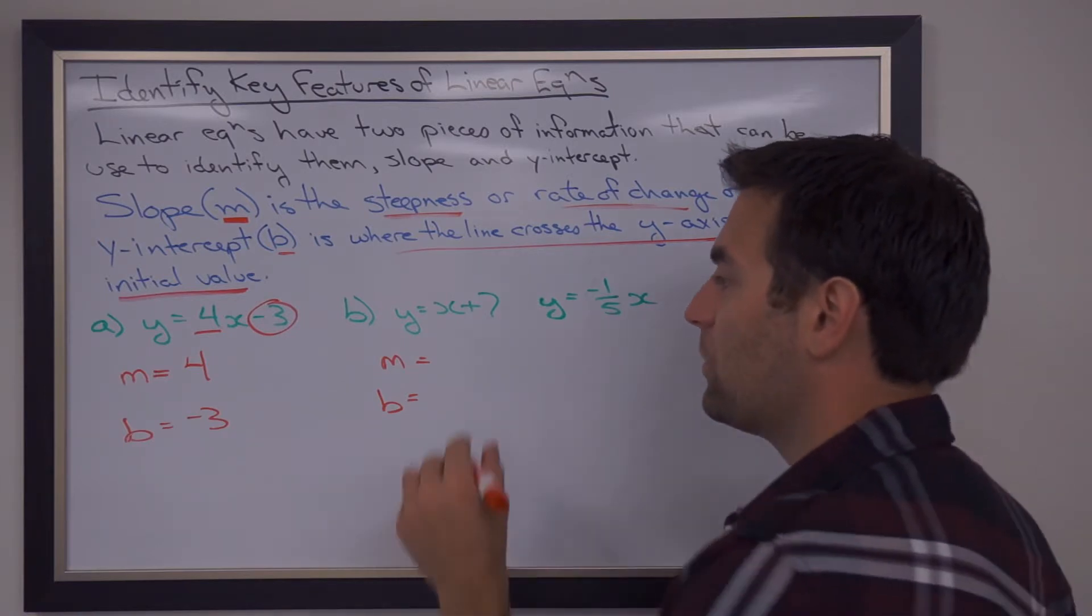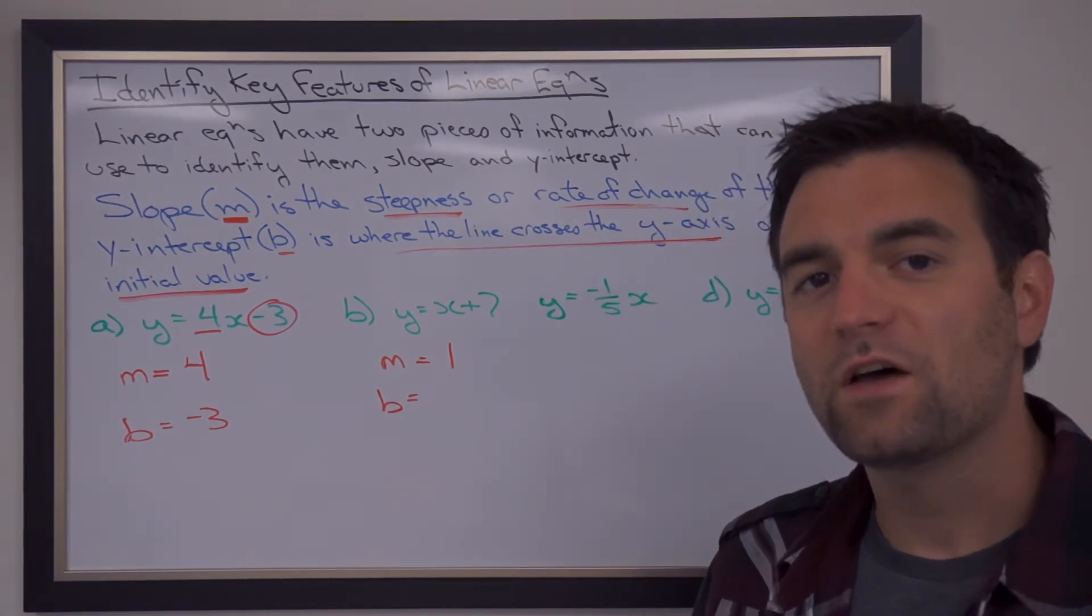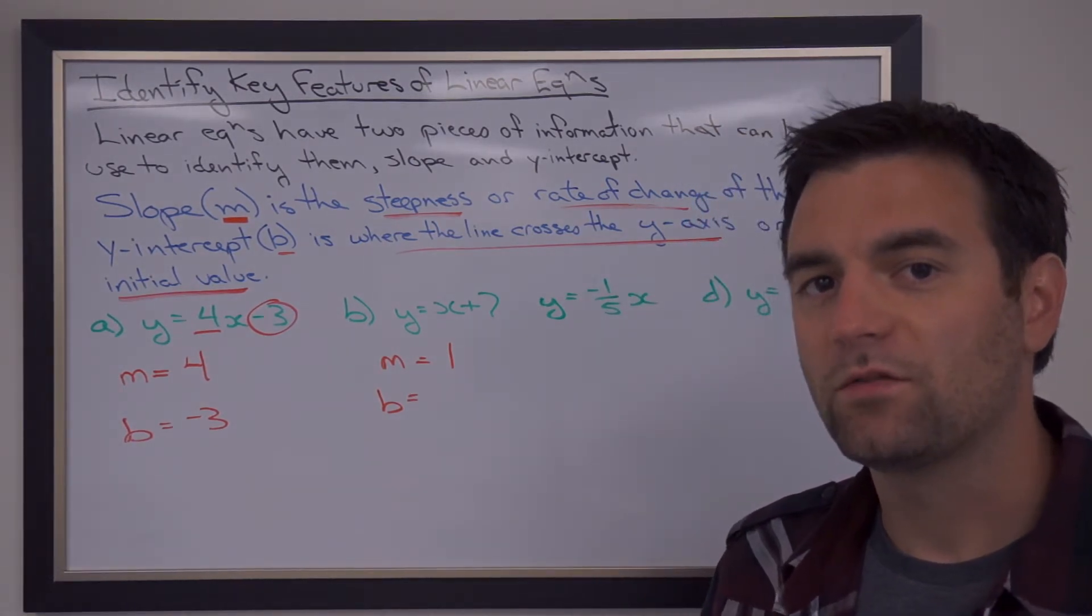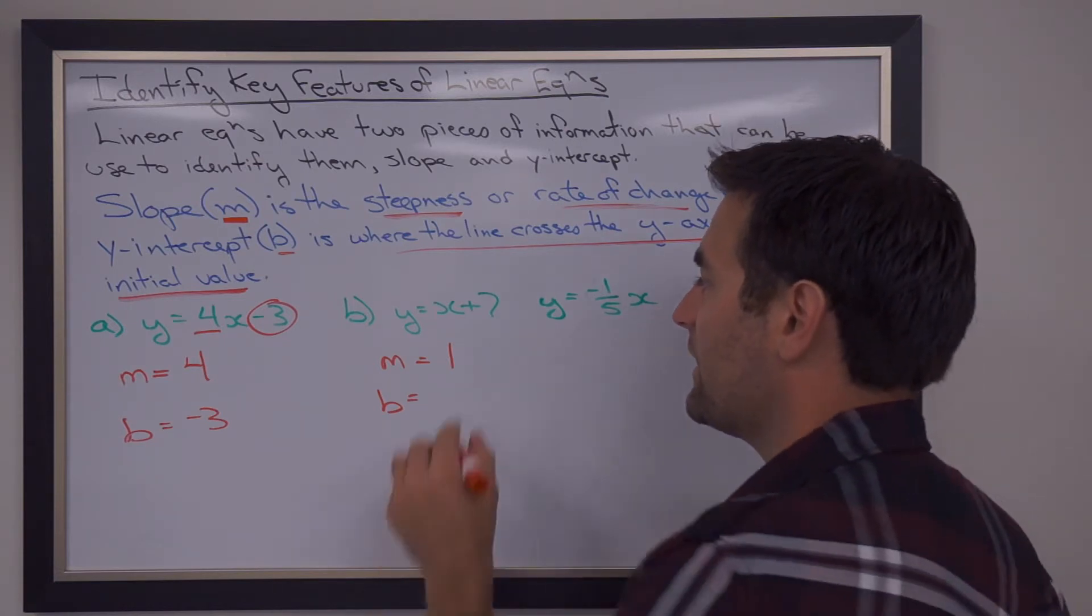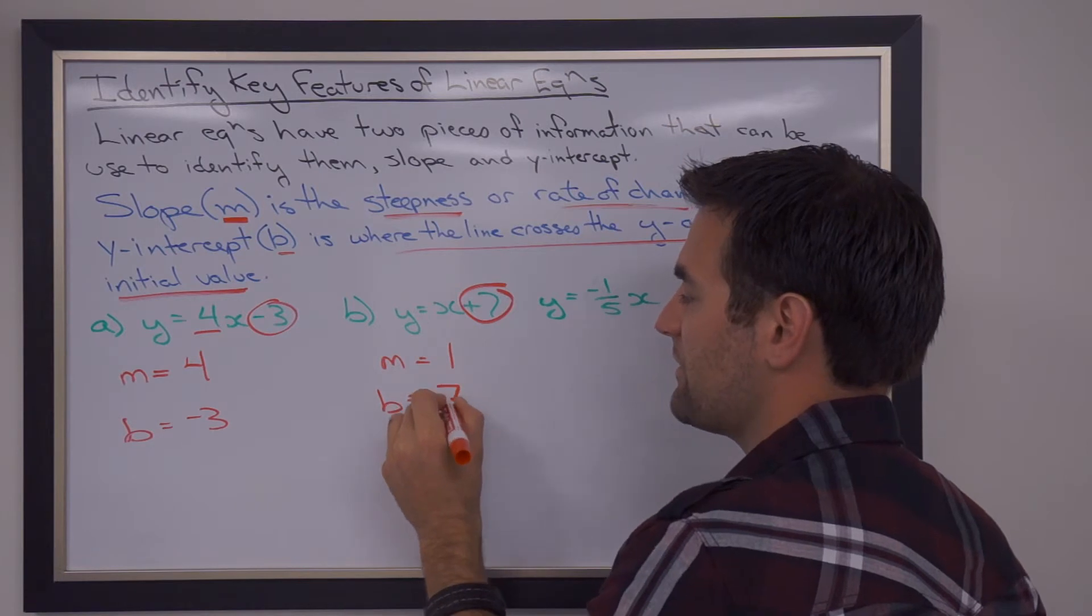The 7 is all by itself. So a plus 7 all by itself, that there means that the y-intercept is 7.